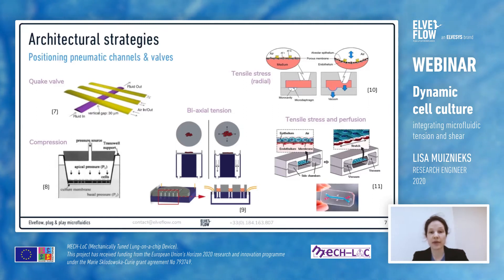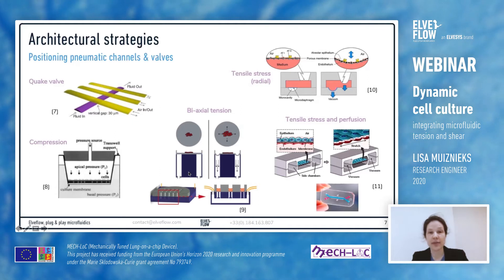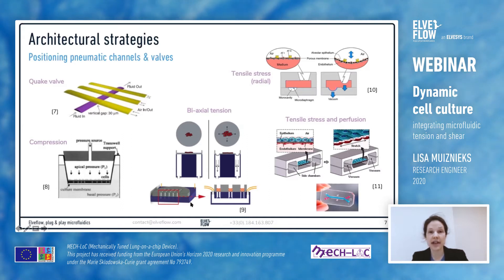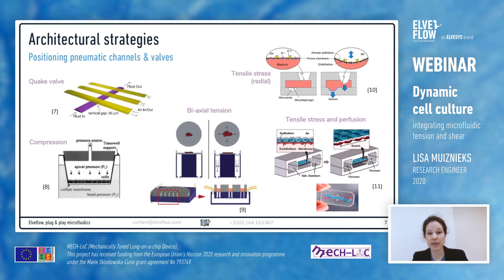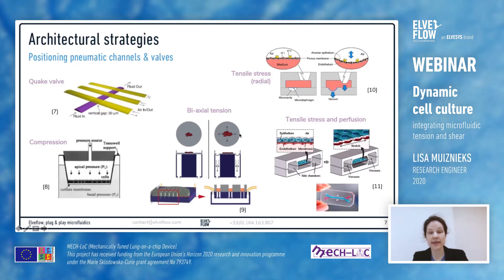Force in the form of biaxial tension can also be applied to cells — shown here in red — on a membrane in gray, sitting on top of a pillar. In this two-part device, the bottom part is sized to fit into a microtiter plate, and by adding a vacuum in the bottom pneumatic chamber you apply stress on the membrane, depressing it and exerting force on the cells in multiple directions.